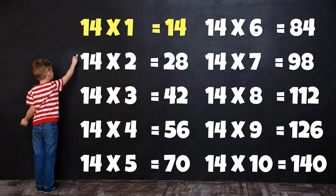Table of 14. 14 1's are 14. 14 2's are 28. 14 3's are 42. 14 4's are 56. 14 5's are 70. 14 6's are 84. 14 7's are 98. 14 8's are 112. 14 9's are 126. 14 10's are 140.